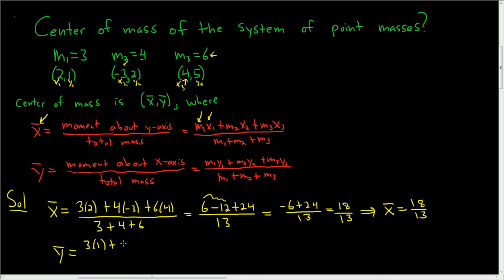So 3 times 1, plus, and then 4 times 2, and then plus, and then 6 times 5. That's all being divided by the sum of the masses, so 3 plus 4 plus 6.